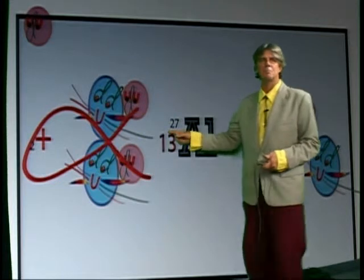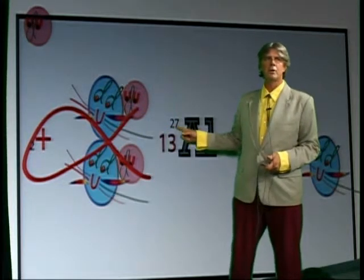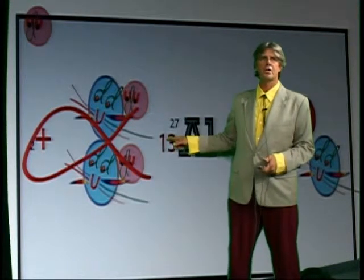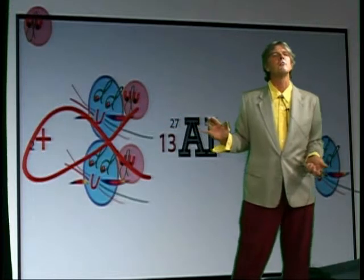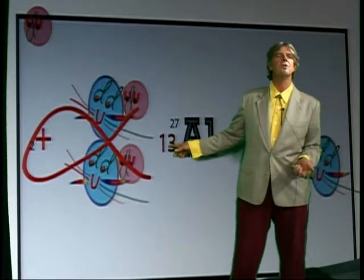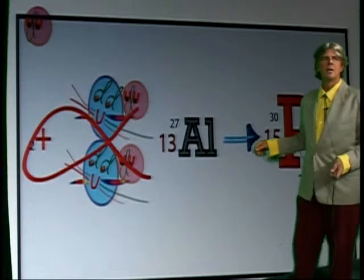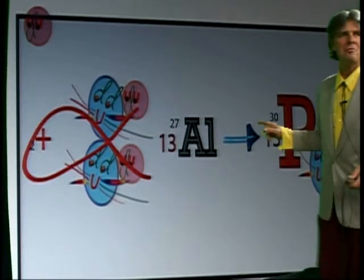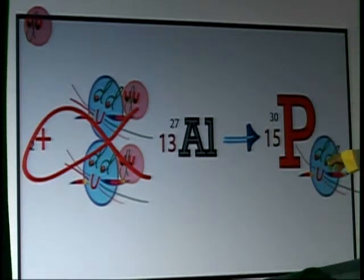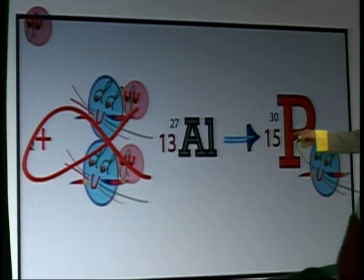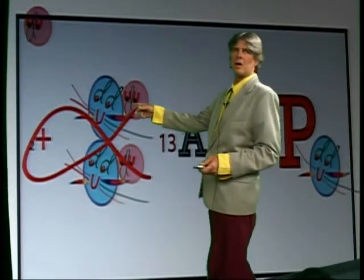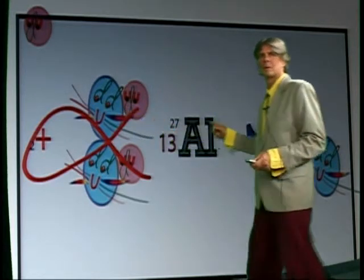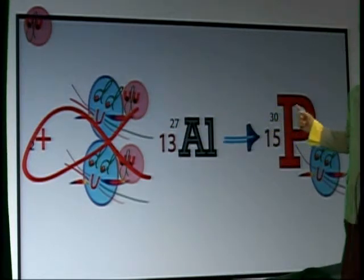So, when you shoot an alpha particle into that, you're going to add 4 to 27 would be 31. 2 to the 13 would be 15. So, what are you going to go looking for? You're going to look for something with 15 that's going to be phosphorus. Now, phosphorus has 31 mass. So, what they found was a neutron was actually emitted. So, a neutron was kicked out from this alpha. You ended up with a net adding of two protons, one neutron, made a 30 mass phosphorus.